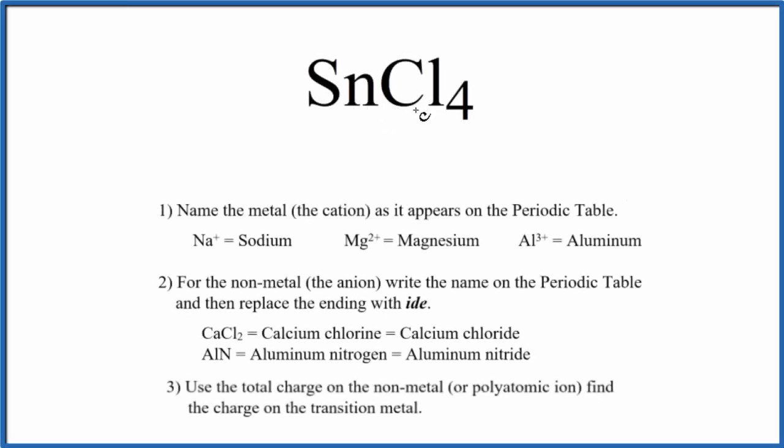To write the name for SnCl4, we need to recognize we have a metal bonded to non-metals. So we have a metal and non-metals - that's going to be ionic. And specifically here, it has a transition metal. So it's an ionic compound with a transition metal, and we'll use these rules here to write the name for SnCl4.